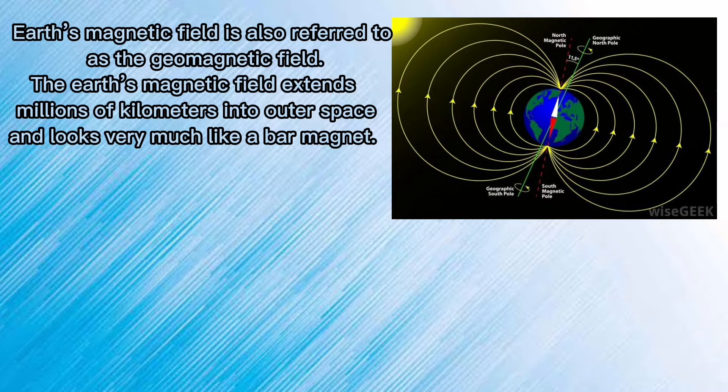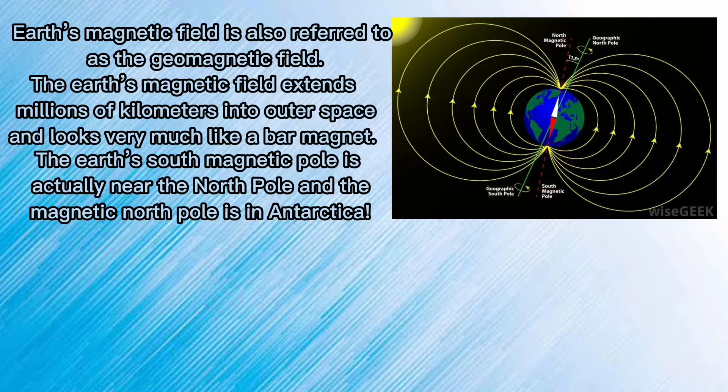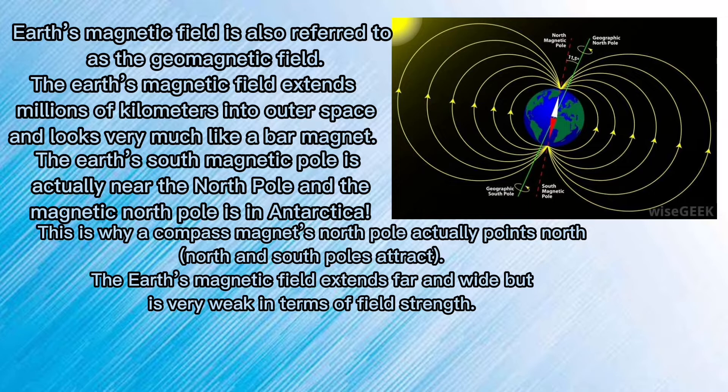The Earth's south magnetic pole is actually near the North Pole and magnetic north pole is in Antarctica. This is why a compass magnet's north pole actually points north. The Earth's magnetic field extends far and wide but is very weak in terms of field strength.